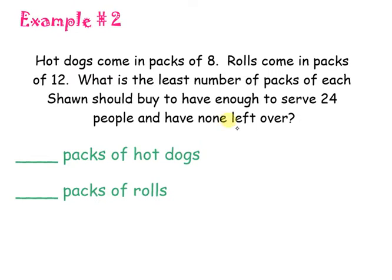Alright, let's look at example number 2. Hot dogs come in packs of 8. Rolls come in packs of 12. What is the least, there's my key word, number of packs of each Sean should buy to have enough to serve 24 people and have none left over. So, this is an interesting problem because this number right here, 24, it went ahead and told me what the LCM is. It's telling me that she needs to serve 24 people.